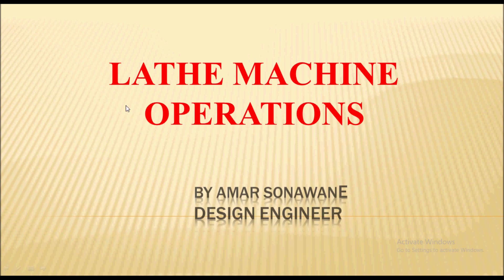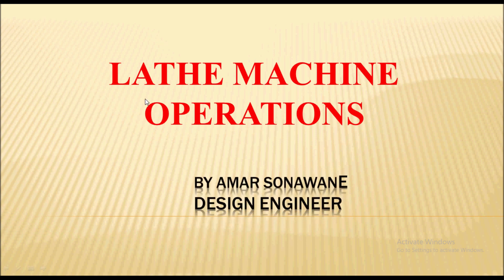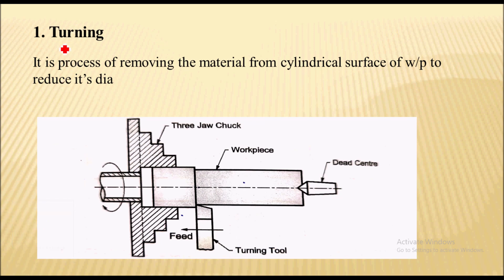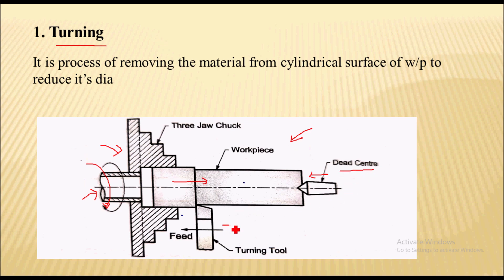Hello everyone, in today's session I will be discussing lathe machine operations. The most common operation performed on the lathe machine is the turning operation. Here you can see the setup for turning operation — the workpiece is held in a three jaw chuck, rotated by the spindle, and supported on the other end by a dead center. The turning tool is fed against this rotating workpiece.